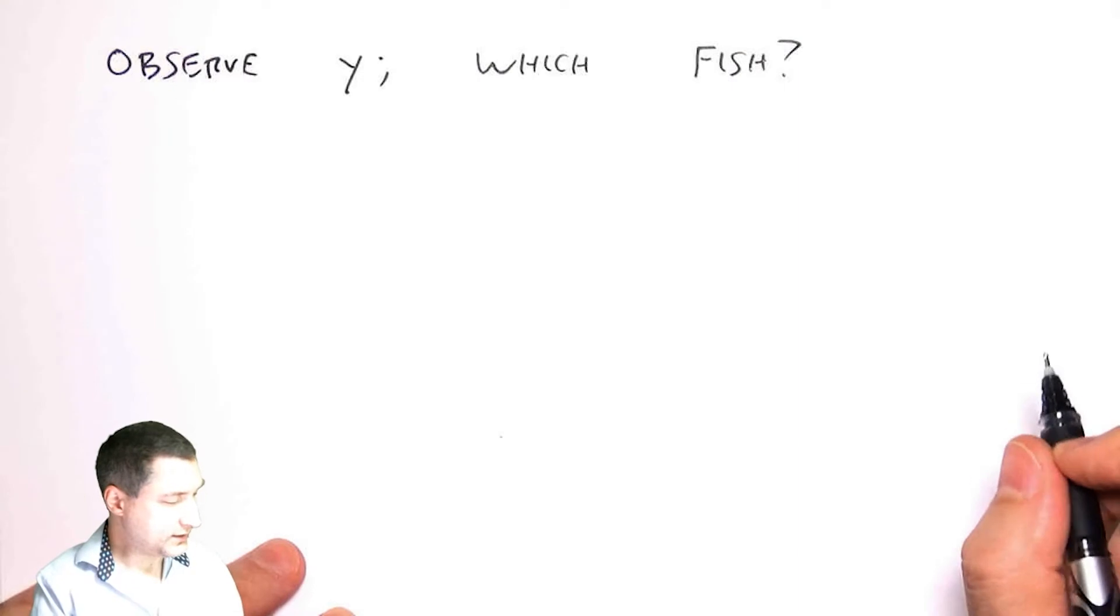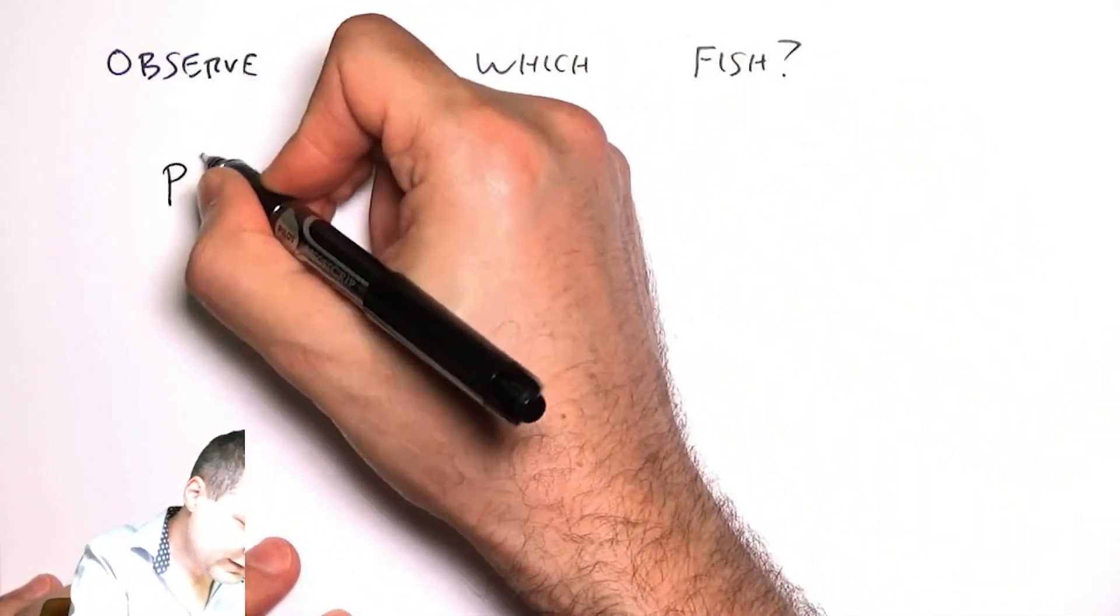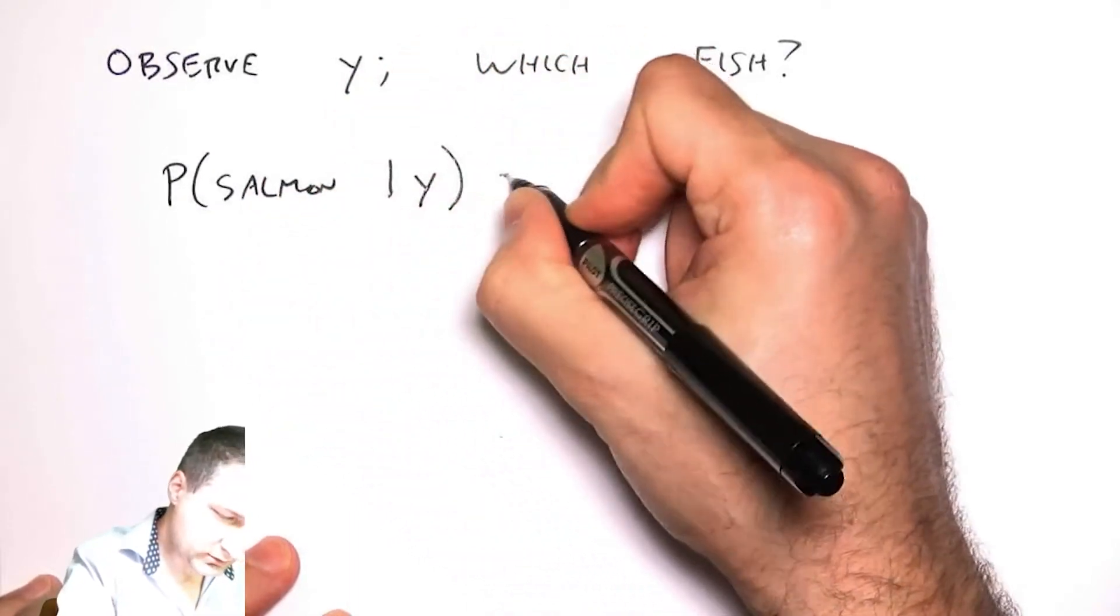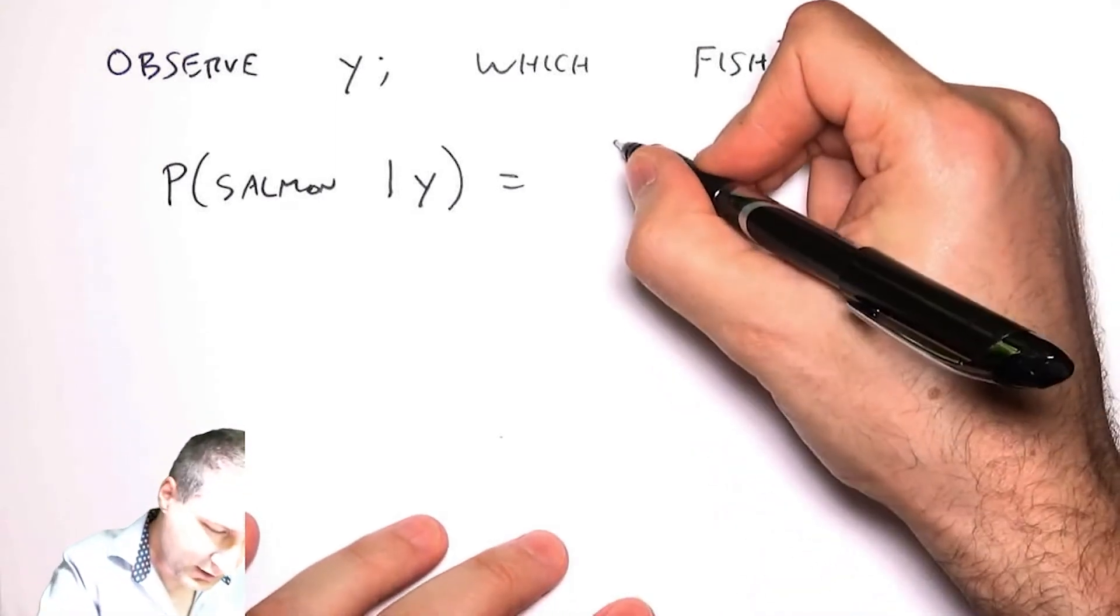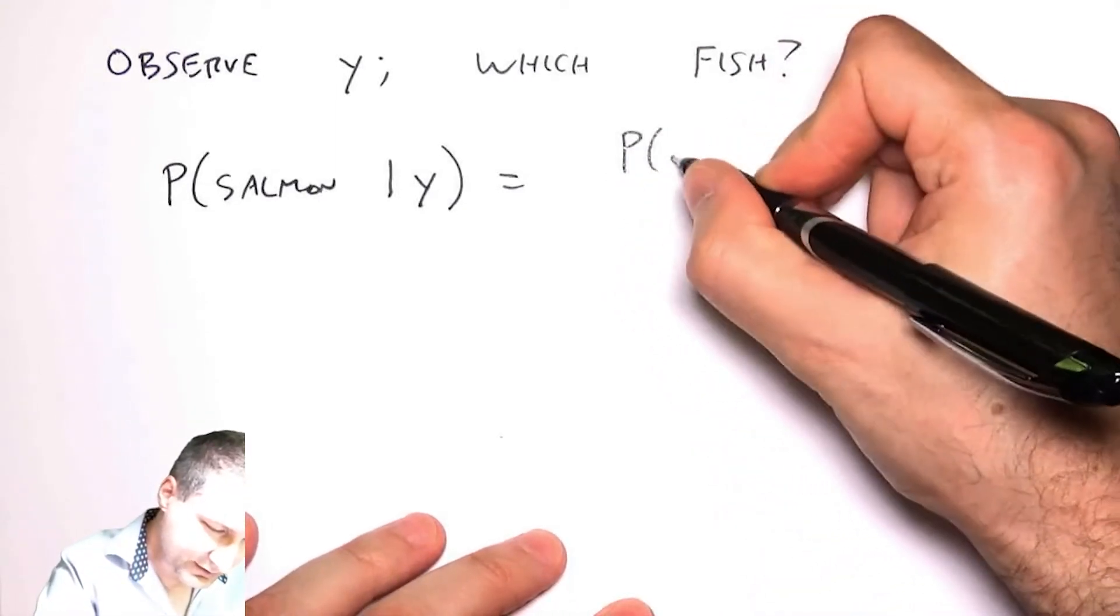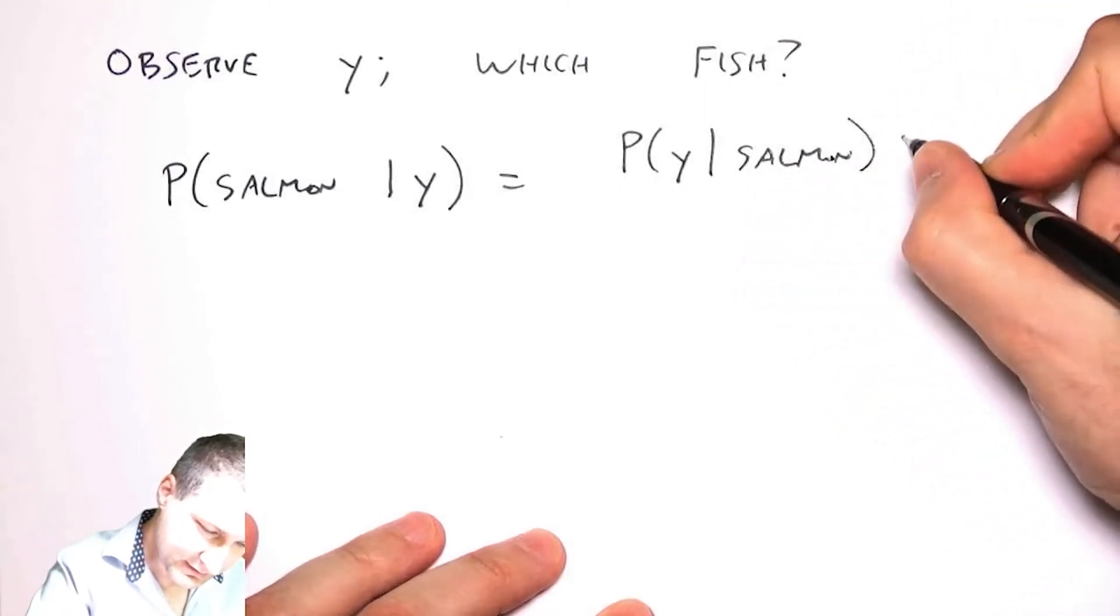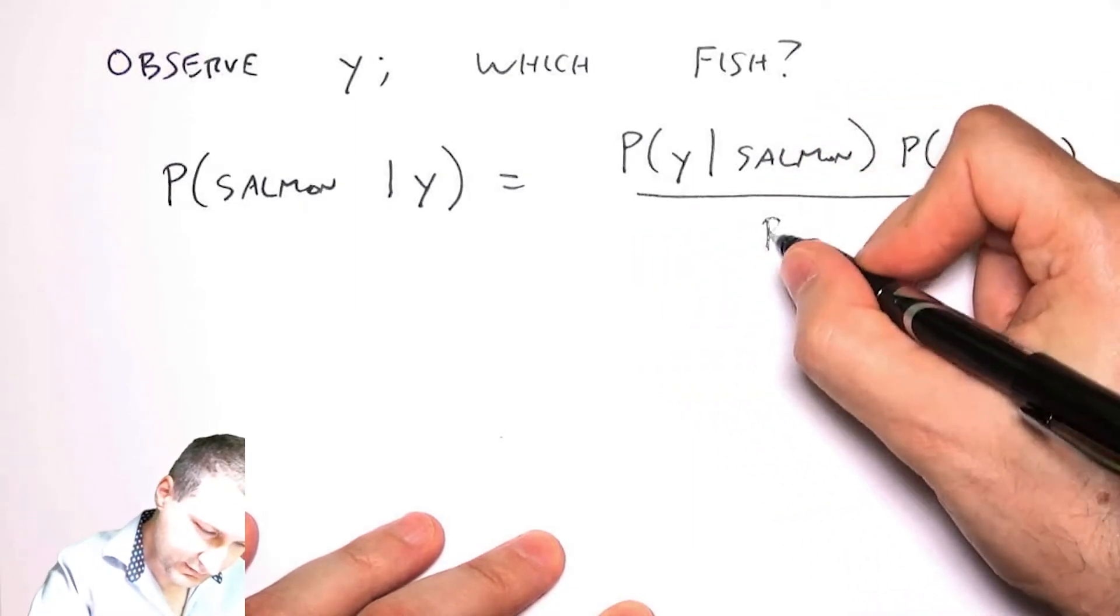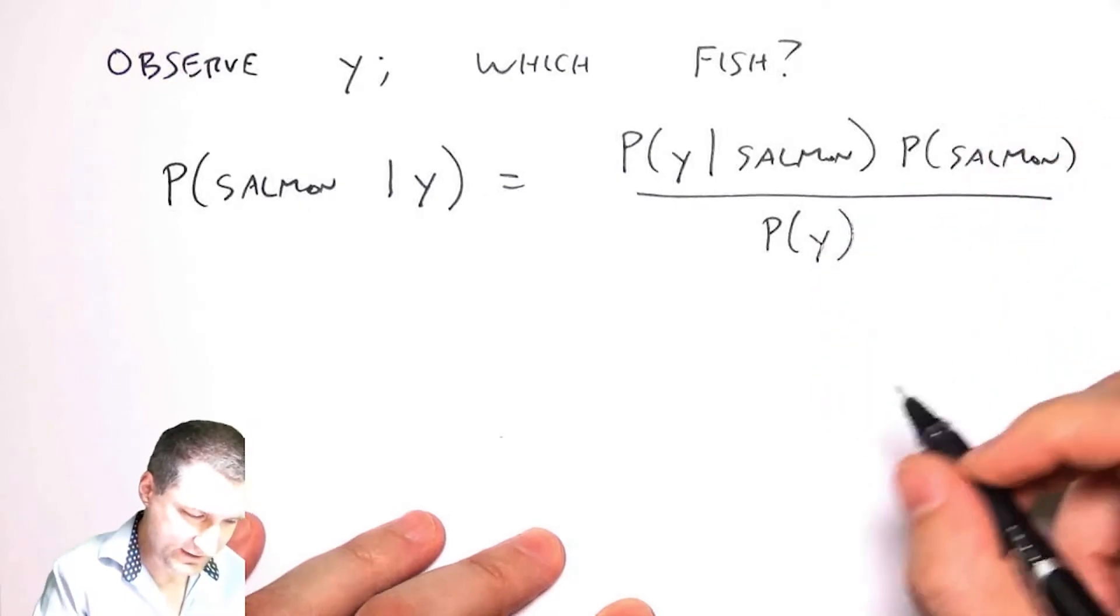How would I compute the probability of salmon given y? Well, I would use Bayes rule. Remember Bayes rule from a while ago. Basically this is the probability of y given salmon times the probability of salmon over the probability of y.